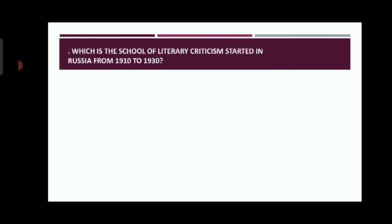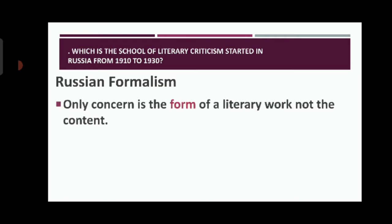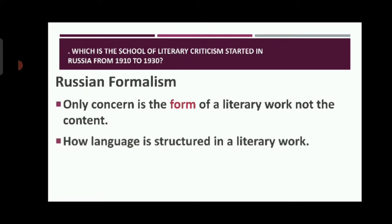The first question is: which is the school of literary criticism started in Russia from 1910 to 1930? The answer is Russian formalism. It came up as a reaction against the symbolist movement in Russia and the romantic theories of literature. It reduced the importance of a text's historical, biographical, and cultural context. Instead, the only concern is the form of a literary work, not the content.